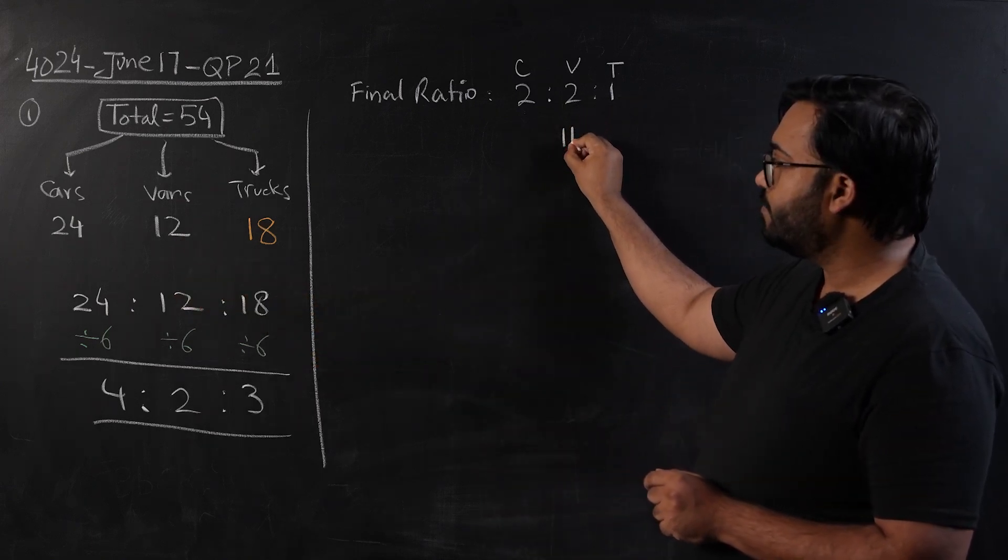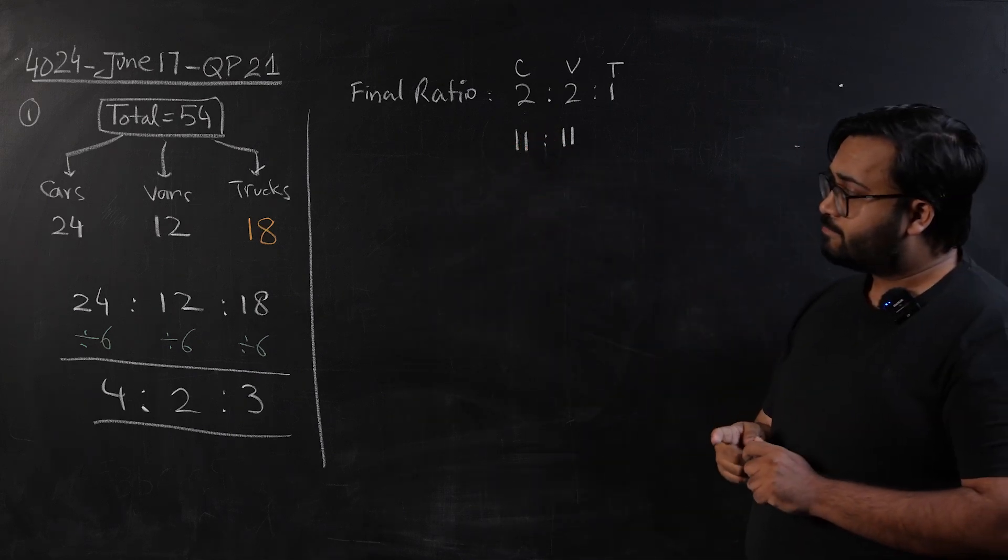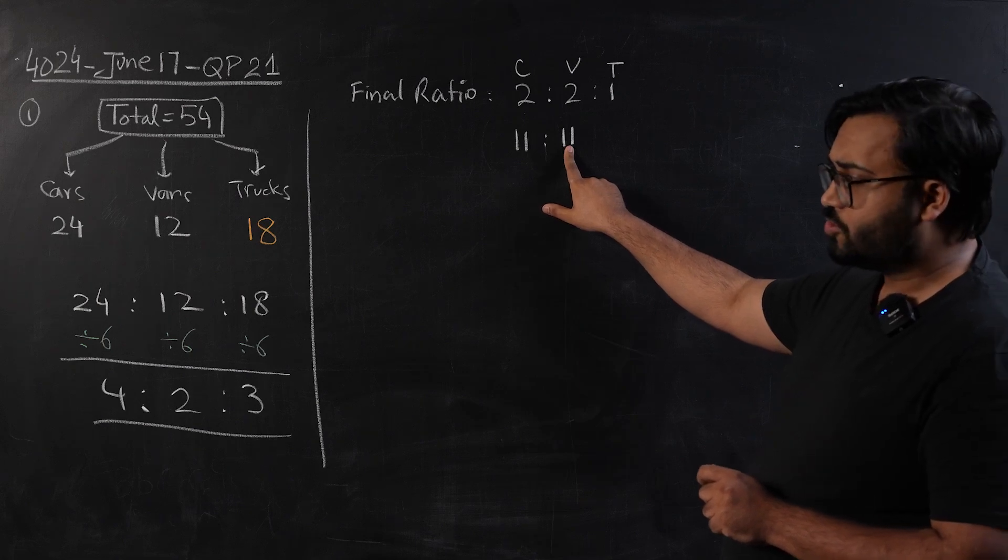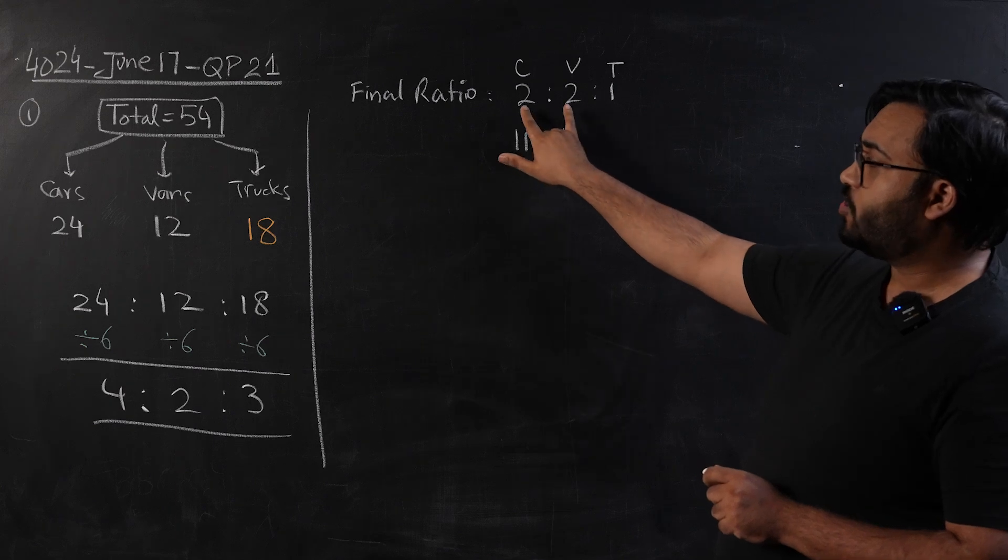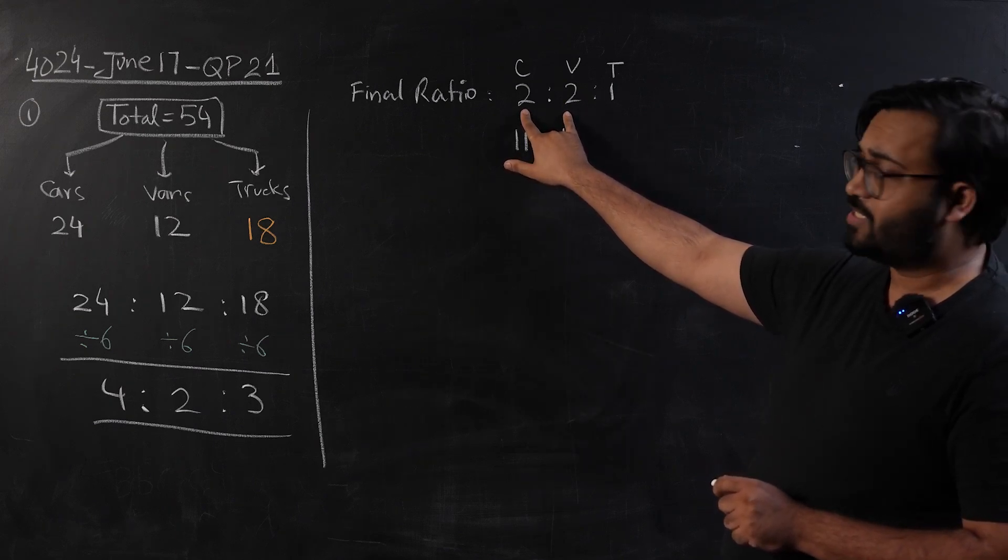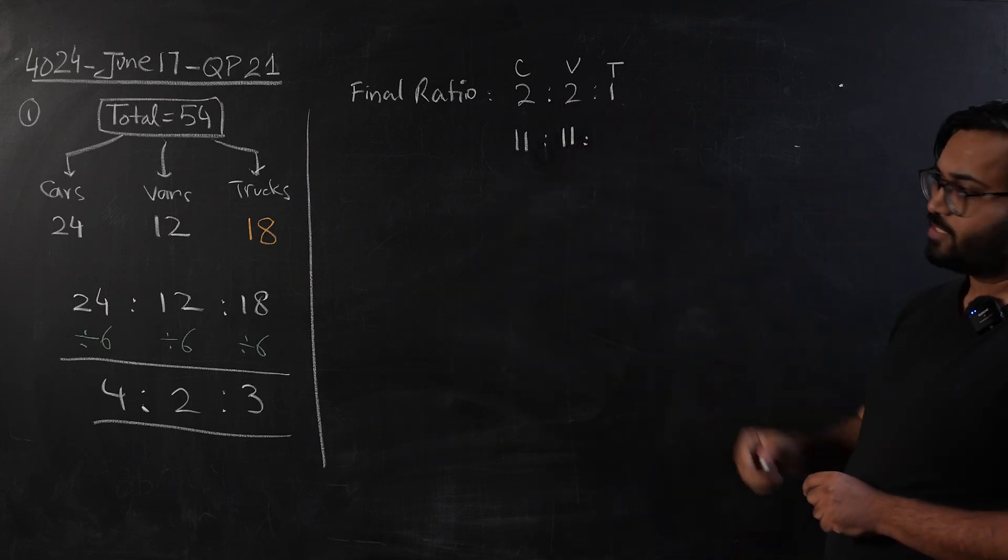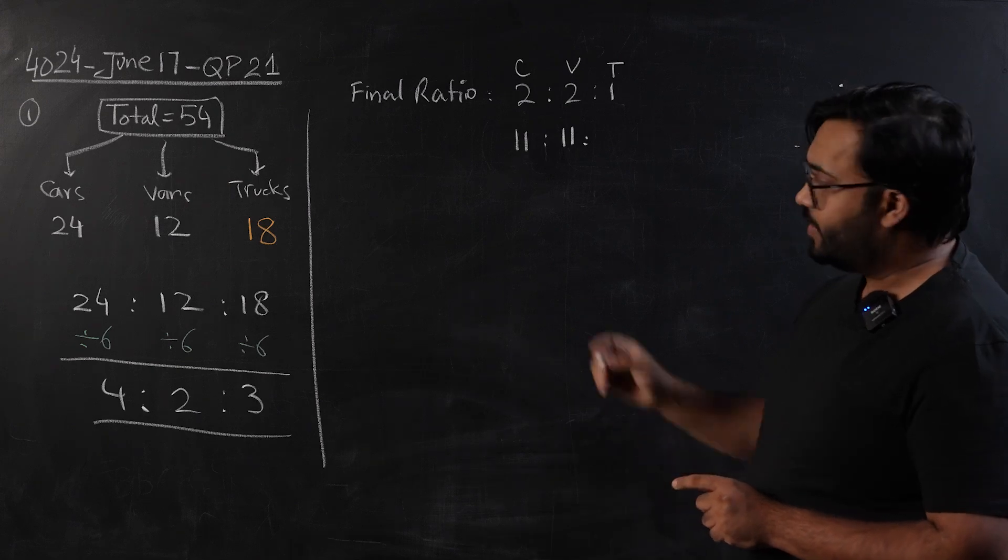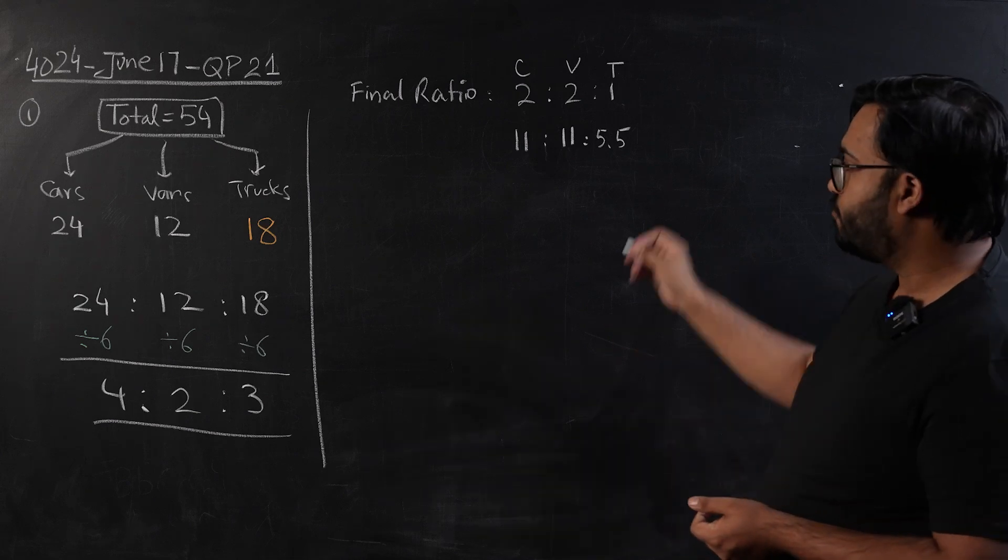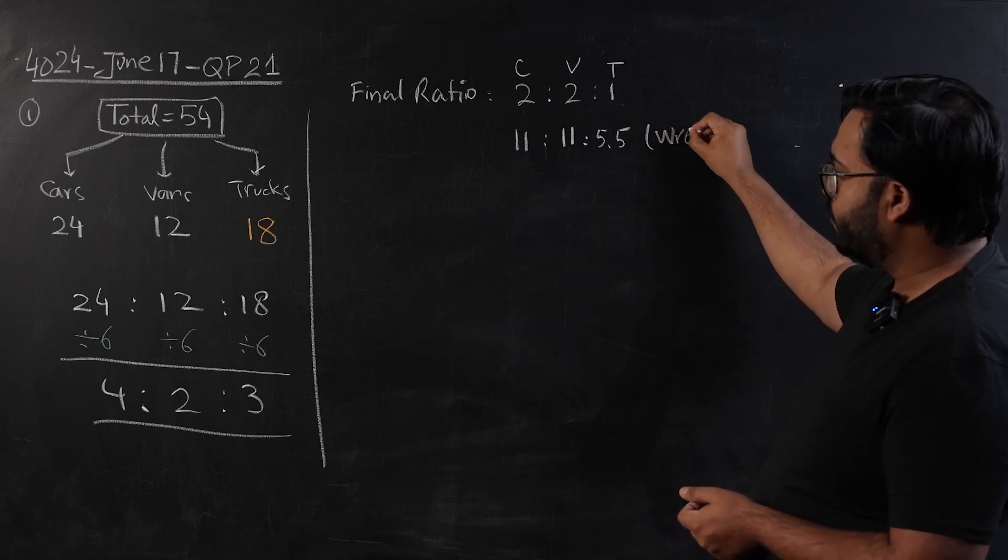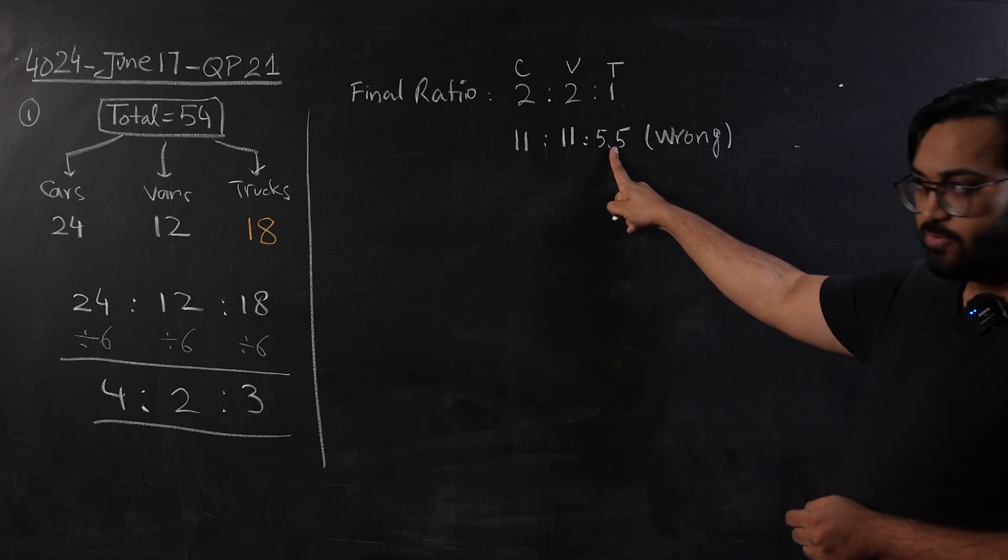I will have 11 vans because we know that at least one van is sold. If one van is sold, we will have 11 vans. Because my final ratio tells me that vans and cars are going to be the same, I will have 11 cars, and half of this number should be trucks. Now we see there is a problem: 11 divided by 2 is 5.5, and you cannot have 5.5 trucks as toys. So that is why this variation is wrong.